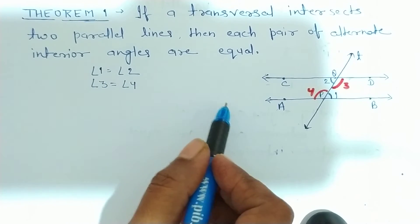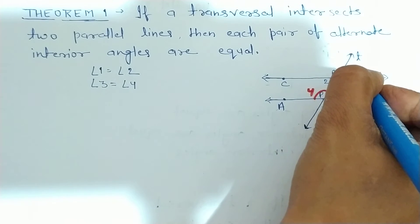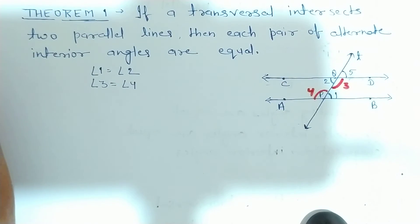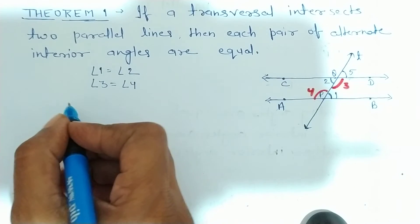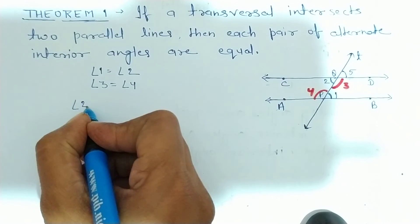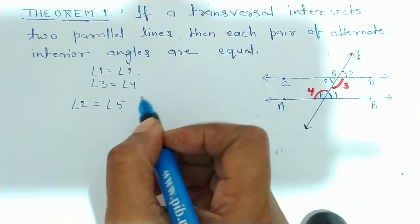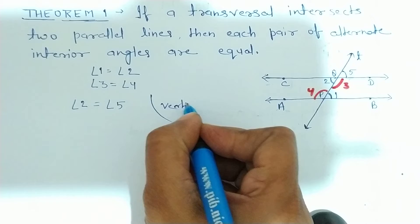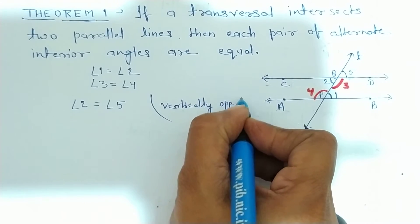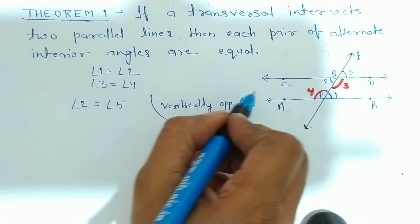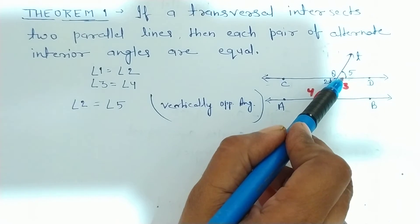So first, you know that angle 2 equal to angle 5. You know that angle 2 equal to angle 5. Vertically opposite angles. Humne padha tha, vertically opposite angles. Theek hai? Due to vertically opposite angles, angle 2 equal to angle 5.